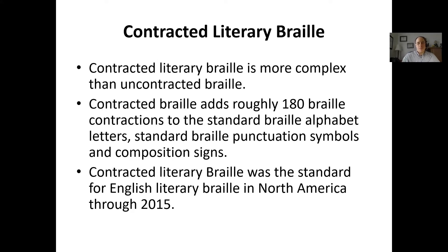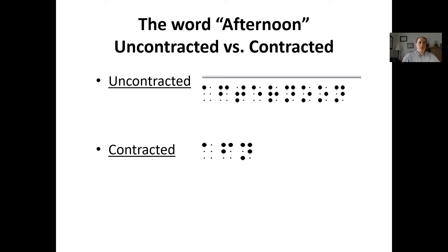Contracted literary braille is more complex than uncontracted literary braille. It adds roughly 180 contractions to the symbol set being used, and it was the standard for braille in North America through 2015. Many of the books out there that were transcribed before 2015 are going to be in contracted literary braille. You can see how much space contracted braille saves — the word 'afternoon' can be written in a couple of letters versus spelling the whole word out.